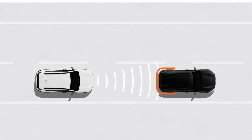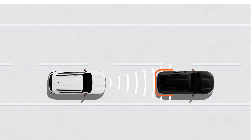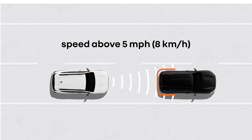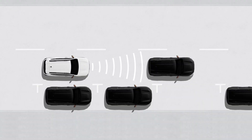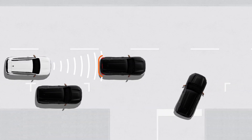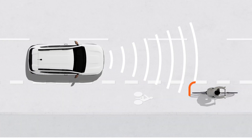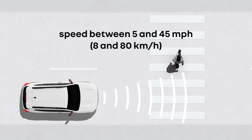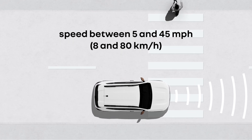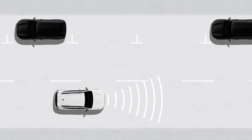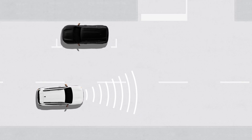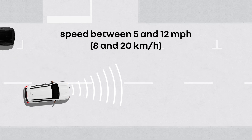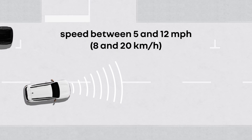The active emergency braking system detects moving vehicles ahead of you in the same lane as soon as your speed reaches around 5 miles per hour (8 kilometers per hour). Conversely, stationary vehicles, pedestrians, and cyclists traveling in the same lane are detected when you are driving at between 5 and 49 miles per hour (8 and 80 kilometers per hour). When you're at a crossroads, the system detects oncoming road users when you are driving at between 5 and 12 miles per hour (8 and 20 kilometers per hour), with the direction indicator on.